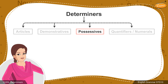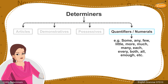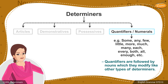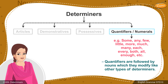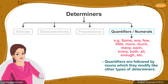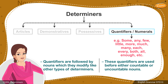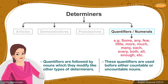Lastly, let's understand the concept of quantifiers. These are followed by nouns which they modify like other types of determiners. Examples include: some, any, few, little, more, much, many, each, every, both, all, enough, etc. These quantifiers are used before either countable or uncountable nouns.